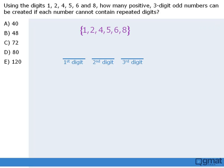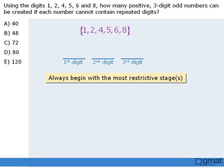Now when we break a task into stages, we should always begin with the most restrictive stage. In this question, the most restrictive stage is selecting the third digit. This stage is the most restrictive since our three-digit numbers must be odd, which means our third digit must be either 1 or 5. So there are two ways in which we can accomplish this stage.